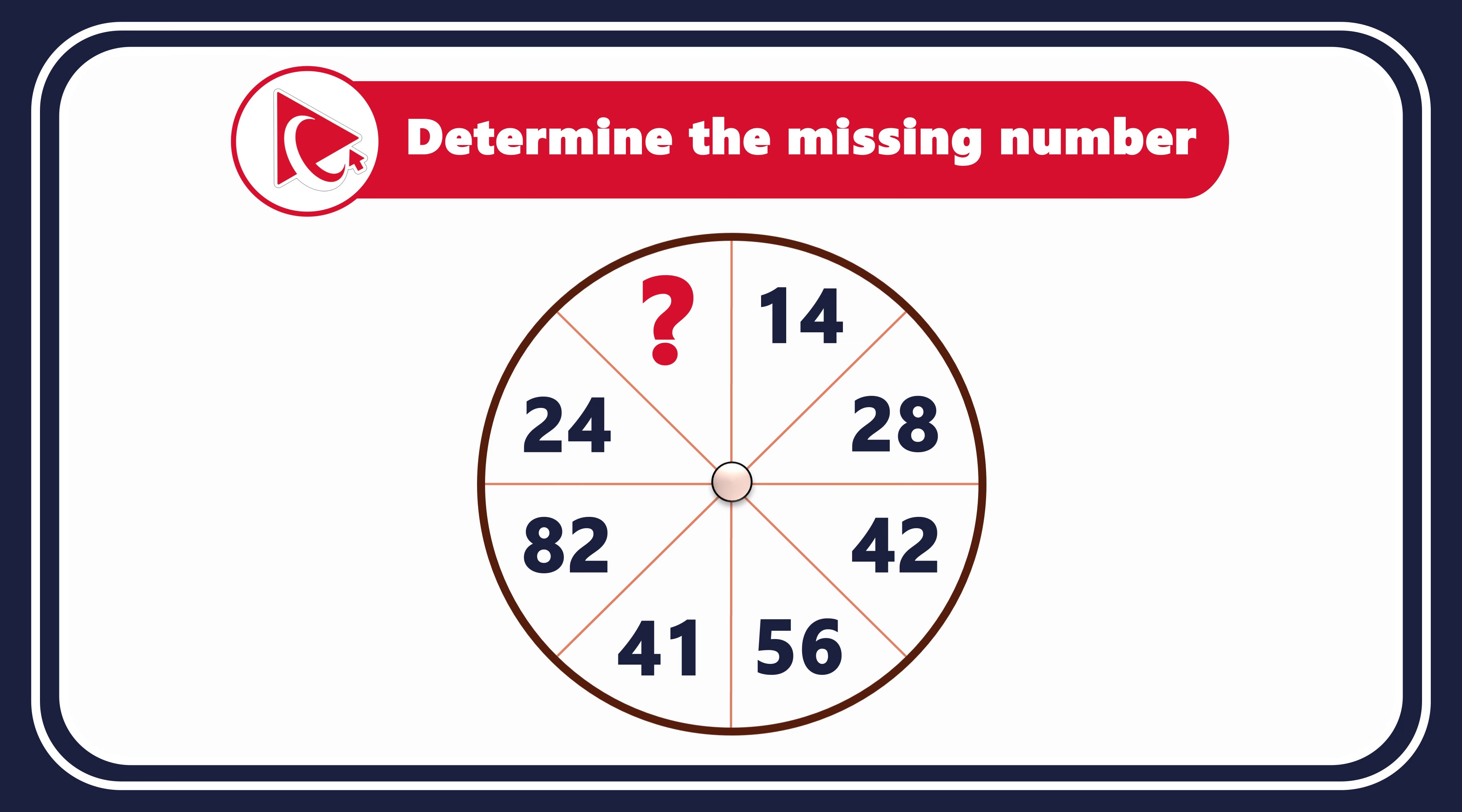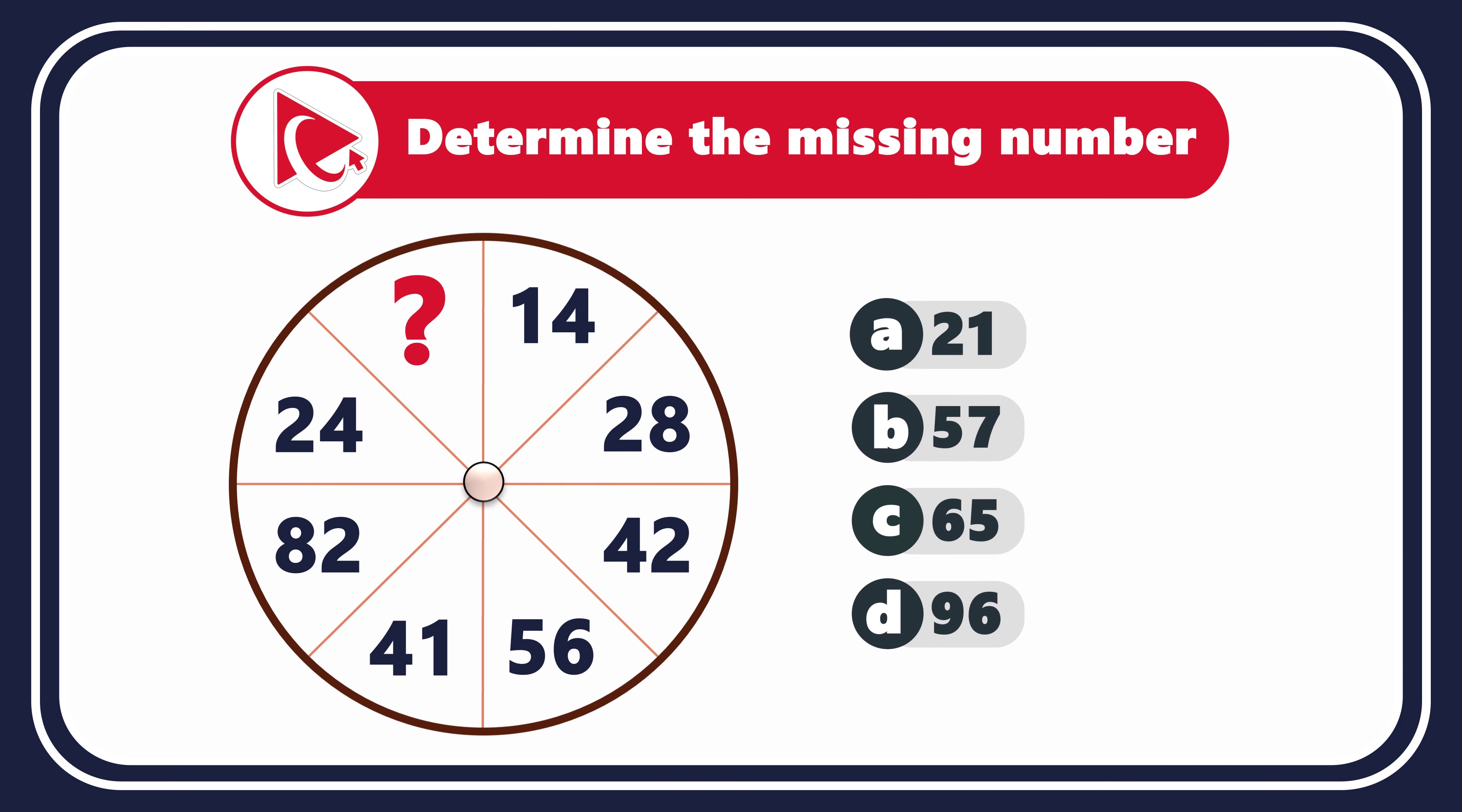You need to determine the missing number and select it out of 4 possible choices: Choice A, 21; Choice B, 57; Choice C, 65; and last but not least, choice D, 96.